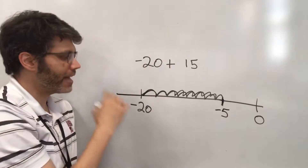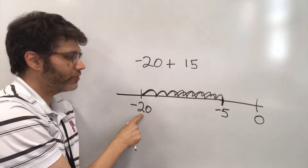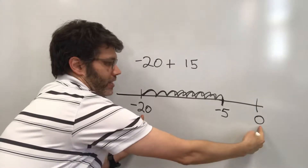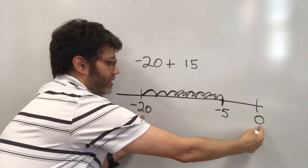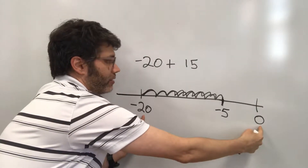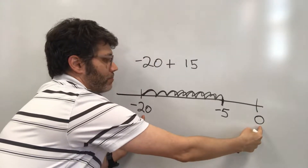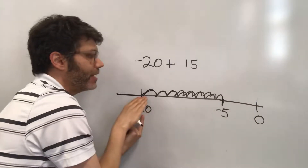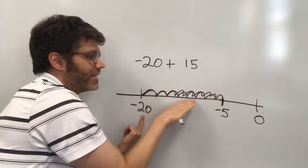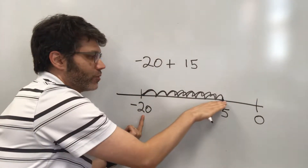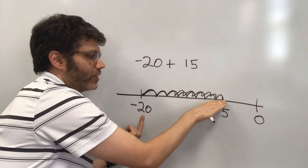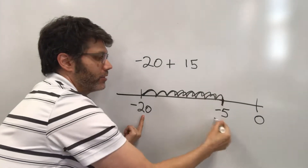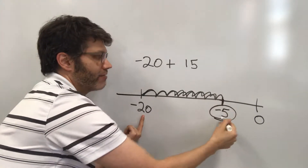Do you see that negative 20 is 20 units away from zero? We're not going to get all the way there, but we will get 15 units to the right, which will be 5 short of zero — in other words, negative 5.